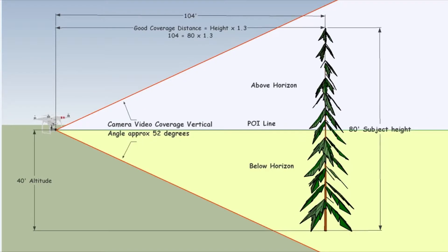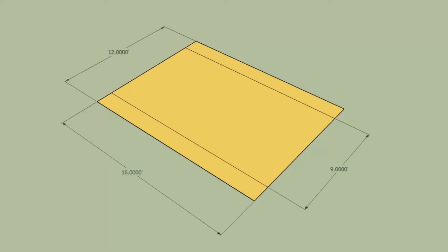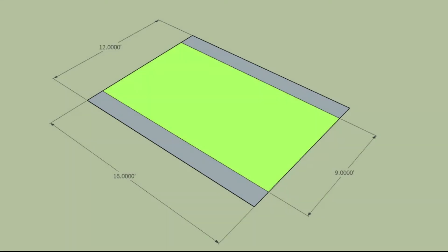The most overlooked detail is the field of view of the camera. The field of view is the frame you see in your video and images, but you can't control it as you can with cameras having a zoom lens. There are two formats for the field of view with the Phantom 3. Still images have either a 4:3 format or a 16:9 format. The gold area is the 4:3 photo format and the green area is the 16:9 format for both photos and video. On the Phantom, the layout is always in landscape mode.